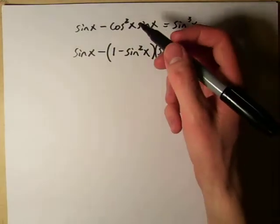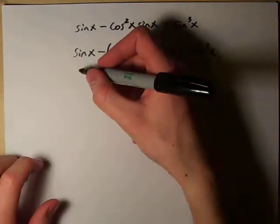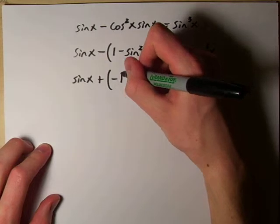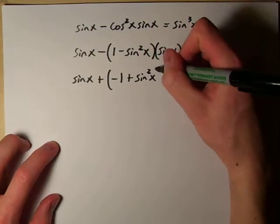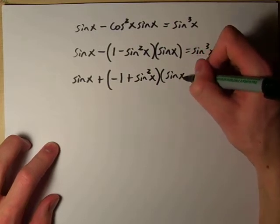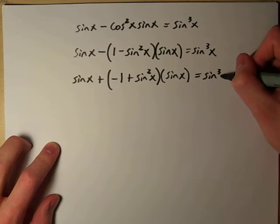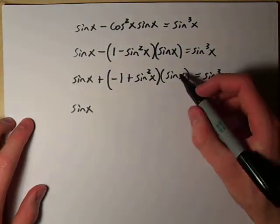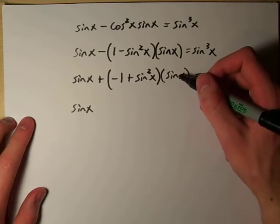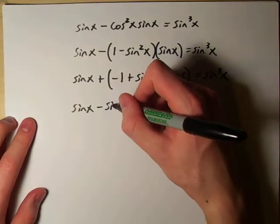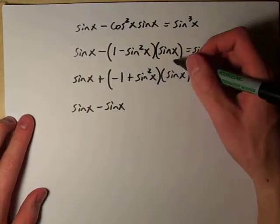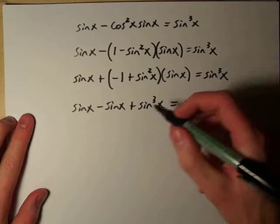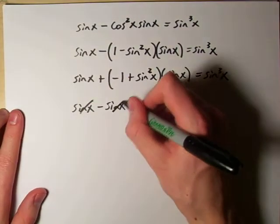Next I'm going to multiply through by negative 1 to simplify. So I end up with sine x plus (negative 1 plus sine squared x) multiplied by sine x equals sine cubed x. Then I multiply sine x through each term in the bracket, giving me a negative sine x. So: sine x minus sine x plus sine squared x times sine x, which gives sine cubed x. These two sine x terms cancel out.